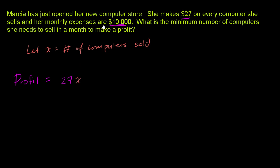She still has expenses of $10,000 per month, so we're going to have to subtract out the $10,000. What we care about is making a profit. We want this number right over here to be greater than zero. So let's just think about what number of computers would get us to zero, and then maybe she needs to sell a little bit more than that.